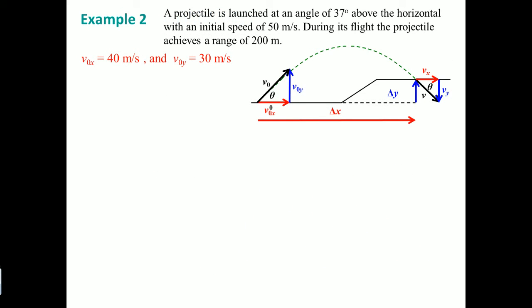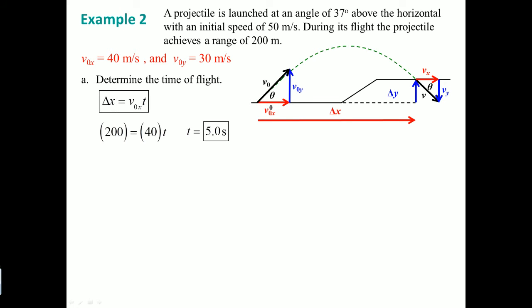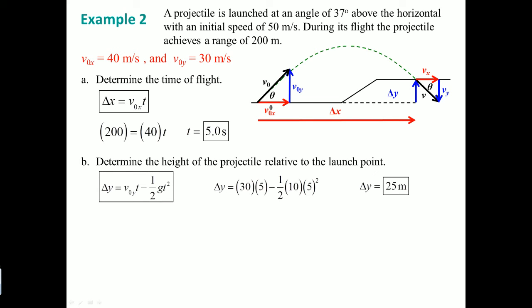Example two: a projectile is launched with a horizontal speed and achieves a range, so there is a Delta Y component. Always compute the time first. Here it's straightforward because they give you Delta X — the range is 200 meters — so you plug that in to solve for time. For part B, now that we have the time component, we plug it into the kinematic equation to determine the height.